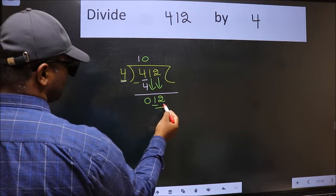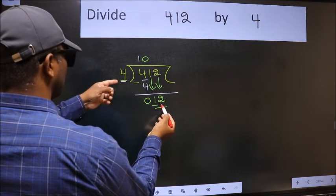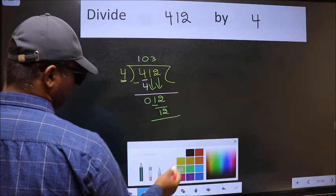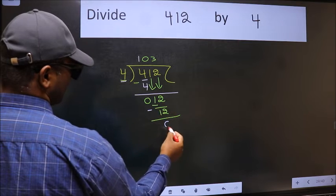Now 12. When do we get 12 in the 4 table? 4 times 3 is 12. Now we should subtract, we get zero.